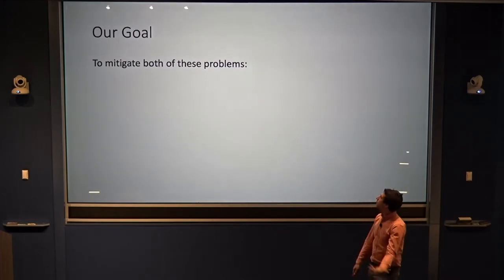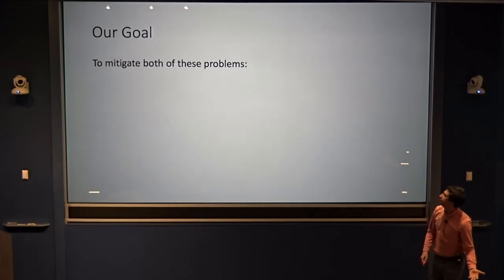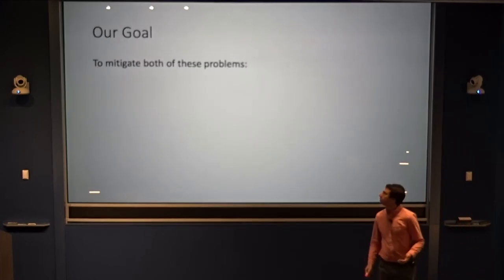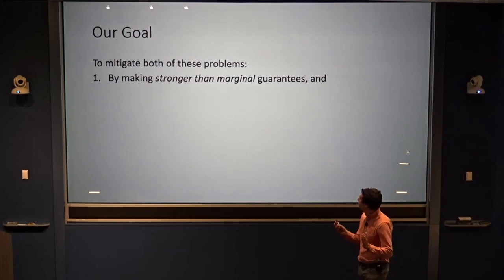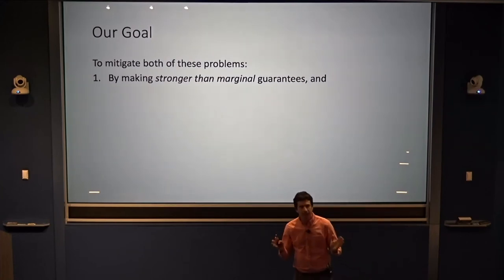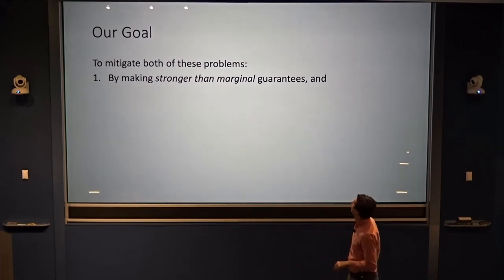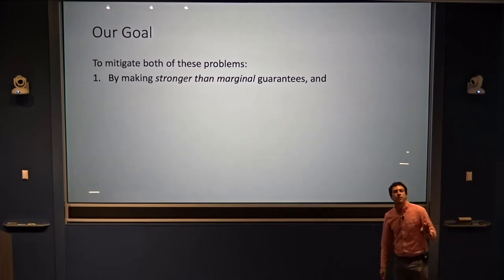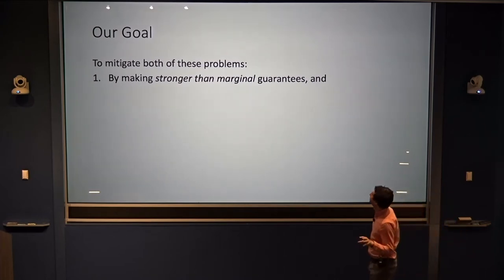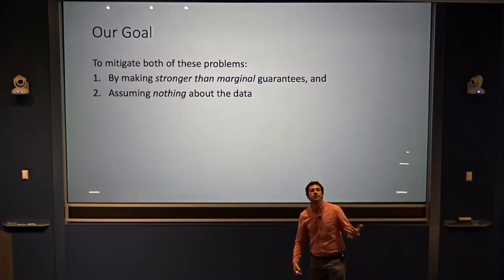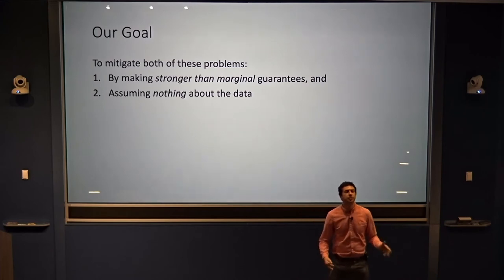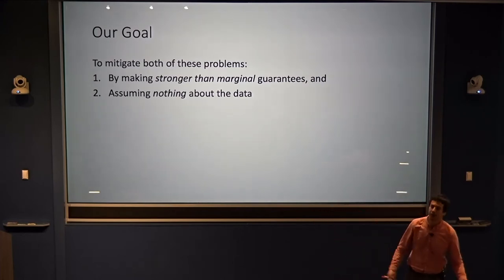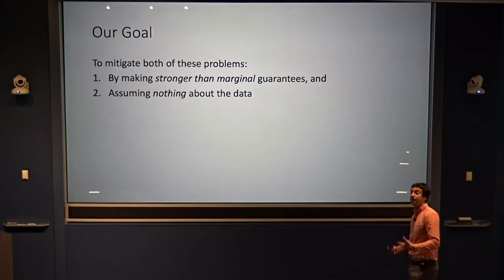What we'd like to do is mitigate both of these problems: come up with a way to give prediction sets that offer guarantees stronger than marginal guarantees, and that can do so without assuming anything about the data. If we don't assume anything about the data, we don't have to worry our assumptions are wrong.